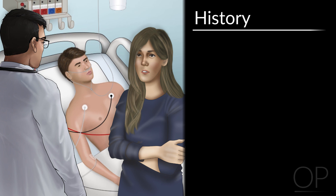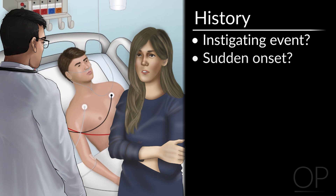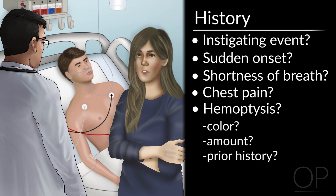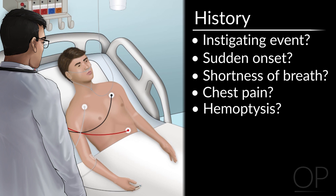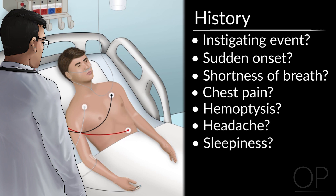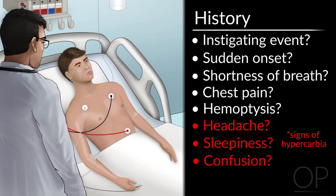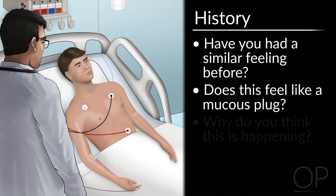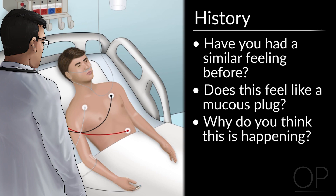What is the important history to obtain from the patient and the family? Is there an instigating event that triggered the respiratory distress? Was it of sudden or gradual onset? Is the patient short of breath? Do they have chest pain? Was there any hemoptysis? If the patient does report hemoptysis, inquire as to the color, amount, and whether the patient has a prior history of this. Please view the hemoptysis lectures for further details on this topic. Assess whether the patient has a headache, is feeling sleepy, or is confused, which would all be signs of hypercarbia or elevated carbon dioxide. CF patients are also very knowledgeable about their symptoms — ask if they have had a similar feeling before, if it feels like a mucus plug, or if they have any idea what the respiratory distress represents.